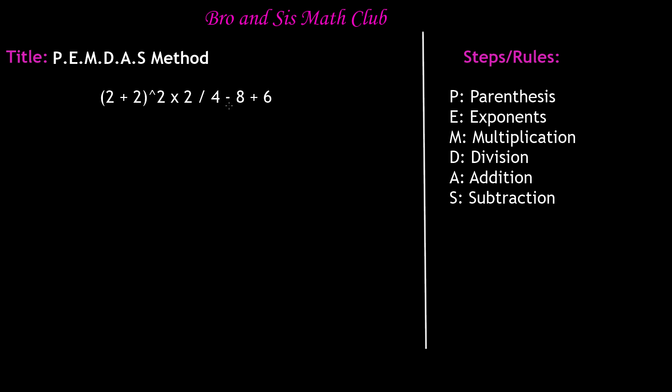The first step, according to PEMDAS, is to do parentheses. In this problem, we have 2 plus 2 in parentheses, so we'll solve this first. We all know that 2 plus 2 is 4, so we'll write 4 and copy everything else down just as it is. So 4 to the power of 2 times 2 divided by 4 minus 8 plus 6.